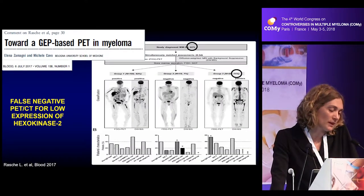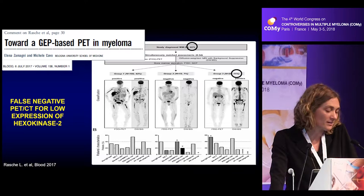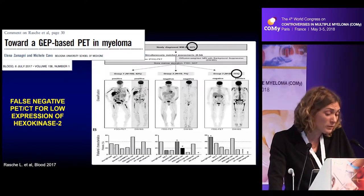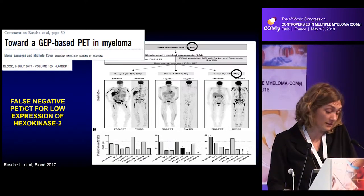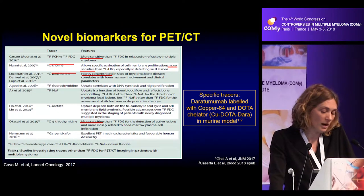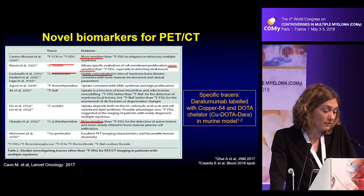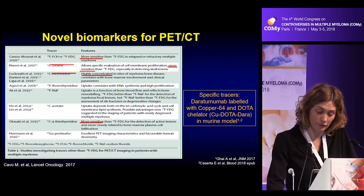A small but present percentage — approximately 10 to 15 percent — of patients are false-negative by FDG PET-CT. These are patients who do not express the enzyme necessary to capture FDG within the cells, making FDG PET-CT an unreliable tool for evaluating MRD after therapy in this group. Alternative biomarkers such as choline or methionine show higher sensitivity in several studies, and specific tracers — for example using Daratumumab — have been explored in murine models for disease detection.